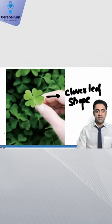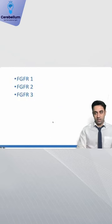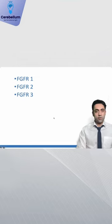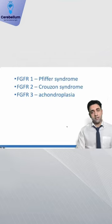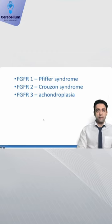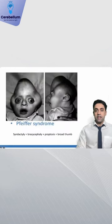A classical picture of the cloverleaf-shaped skull. This cloverleaf-shaped skull is seen in Pfeiffer syndrome, caused by an FGFR1 gene mutation. Important to remember: FGFR1 mutation is seen in Pfeiffer syndrome, FGFR2 is seen in Crouzon syndrome, and FGFR3 mutation is seen in achondroplasia.